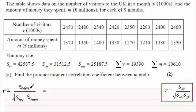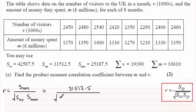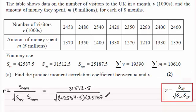So for SVM that's going to be 31512.5, and this is all divided by the square root of SVV which is 42587.5, multiplied by SMM which is 25187.5.